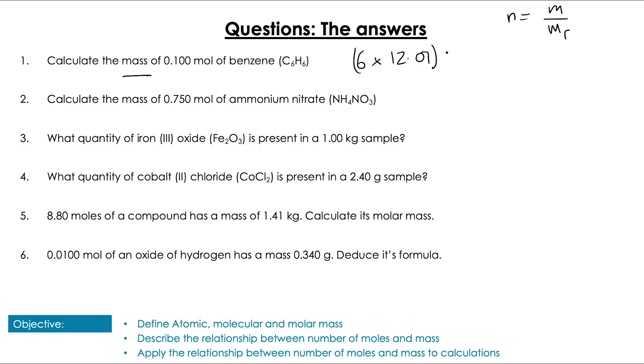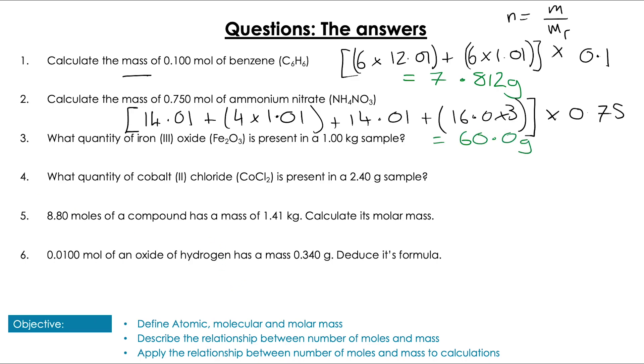Pop our equation up at the top. First one, we're calculating mass, so I'm going to calculate the molar mass of benzene first, and then I'm going to rearrange the equation and multiply it by the number of moles to give me my mass, which equals 7.812 grams. For the next one, it's mass again, so it's going to be moles times molar mass. So I'm going to work out my molar mass of my ammonium nitrate. That's nitrogen plus 4 times hydrogen plus nitrogen again, plus 3 times oxygen. Completely fine if you'd notice there was 2 nitrogen here as well and done that. And then I just multiply that by the number of moles, which gives me 60.0 grams.